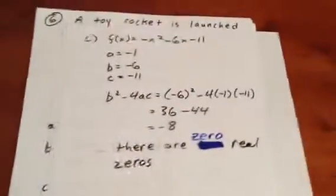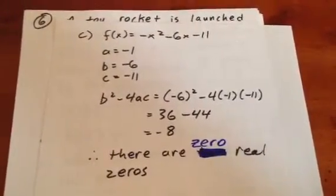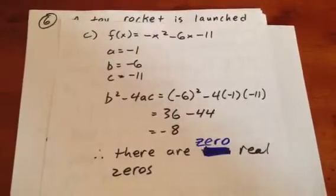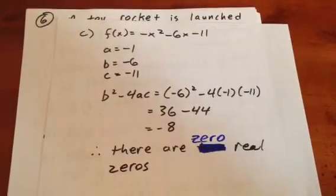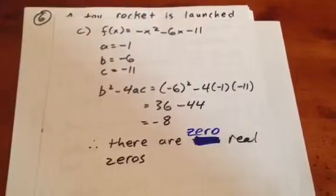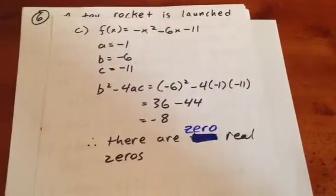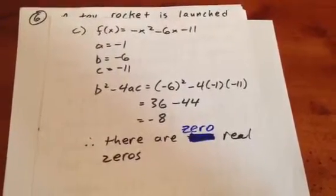For our final question in this example, we have f(x) = -x² - 6x - 11. We determine our a, b, and c values, and when we evaluate b² - 4ac, we see that it equals -8. Since the discriminant is less than zero, there are zero real zeros.